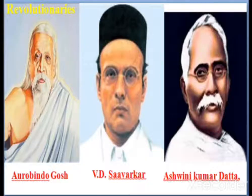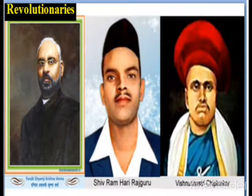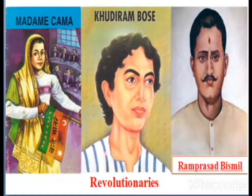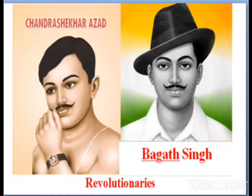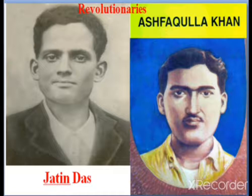In the pictures you can see great revolutionary leaders like Aurobindo Ghosh, V.D. Savarkar, Ashwin Kumar Datta, Rajanarayan Bose, Ras Bihari Ghosh, Chapekar Brothers, Shivaram Hari Rajguru, Vishnu Shastri Chiplunkar, Madame Cama, Khudiram Bose, Ram Prasad Bismil, Chandrasekhar Azad, and Bhagat Singh. These great leaders sacrificed their lives against the British government to get freedom for India. Jatin Das and Ashfaqulla Khan were also among the great revolutionary leaders, all sharing the intention of getting freedom for their country by sacrificing their lives.